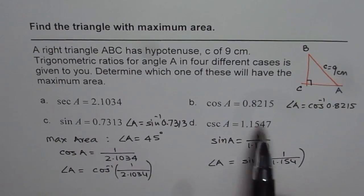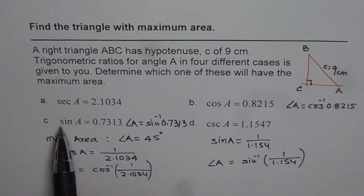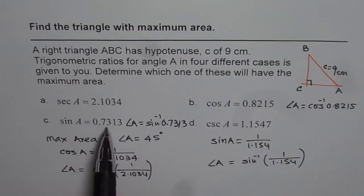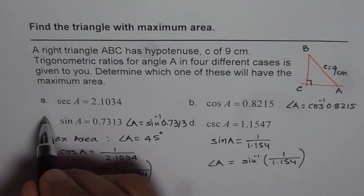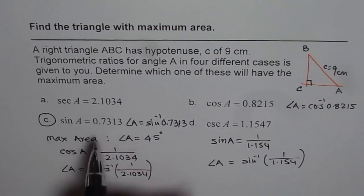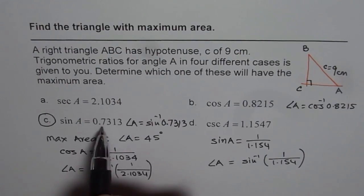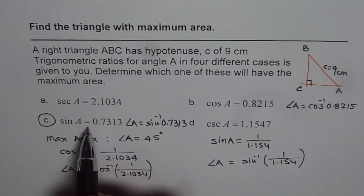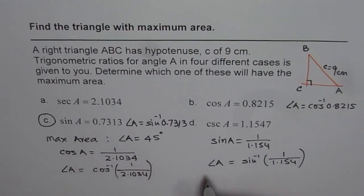So I recommend you to use your calculator, find all angles, and get your answer. Well, from my judgment, I can tell you that sin A equals to 0.7313 should be the answer. Since this is closest to sin of 45 degrees, right? So, as you know,